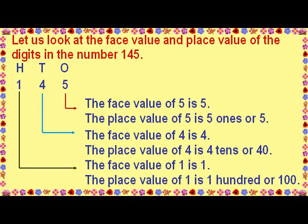Let us look at the face value and place value of the digits in the number 145, which has a 100s place, 10s place, and 1s place. The face value of the digit 5 is 5, and the place value of the digit 5 is 5 ones, or five. The face value of the digit 4 is 4, and the place value of the digit 4 is 4 tens, or 40. The face value of digit 1 is 1, and the place value of digit 1 is 100.